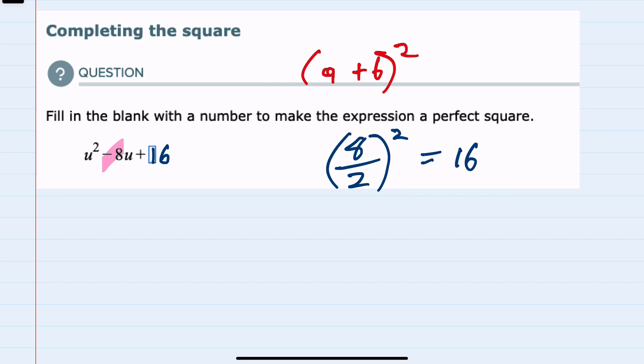It's worth recognizing that as a perfect square now, this could be written as u minus 4 quantity squared. That would be the perfect square. But the term that we added to make it a perfect square was a positive 16.